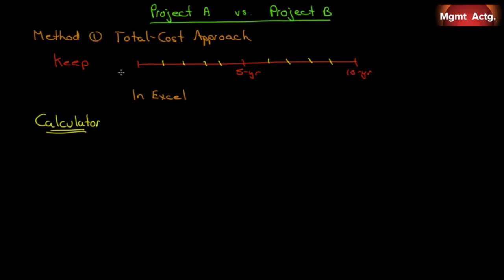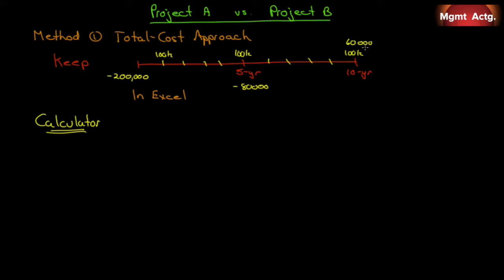The story to keep the boat: if we spend $200,000 today, we will generate a cash flow of $100,000 for the next 10 years. However, we will have to spend $80,000 after year five to maintain the boat, and then we can sell it for $60,000 at the end. We'll spend $200,000 today, generate $100,000 in each of those years, spend another $80,000 in year five to maintain the boat, then sell it in year ten for $60,000.